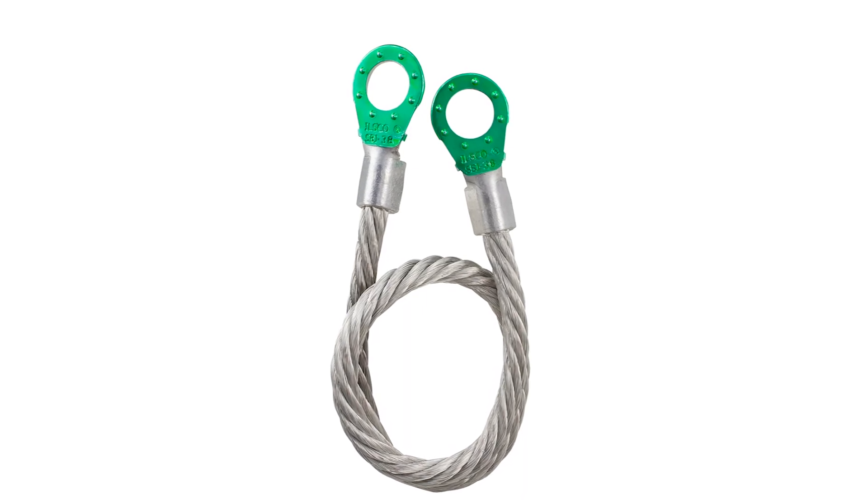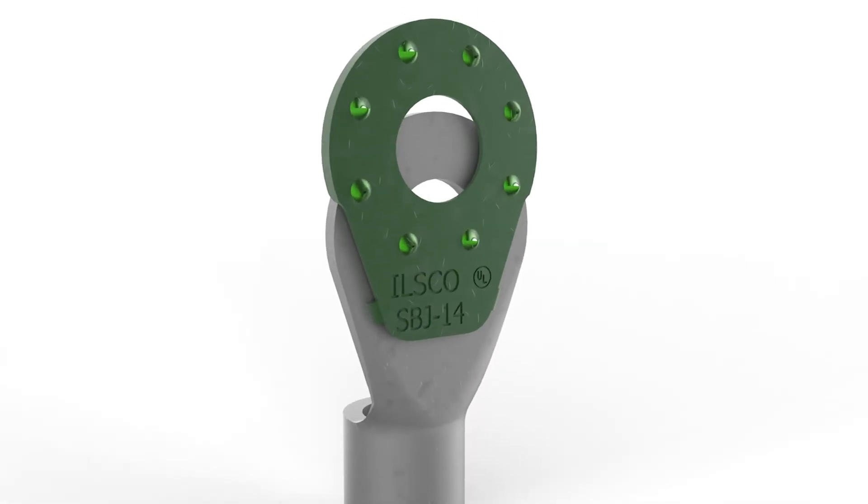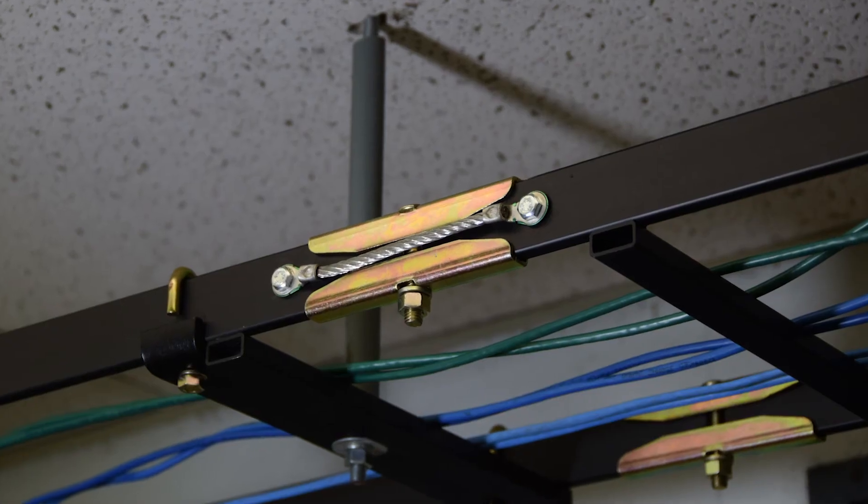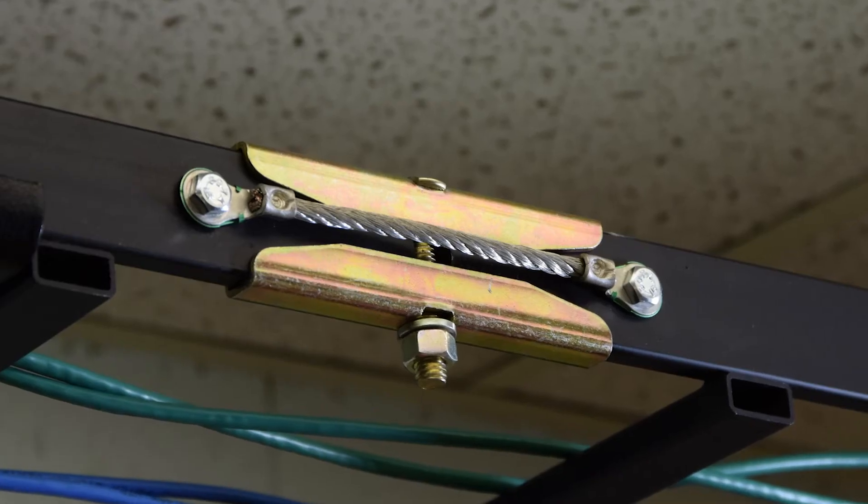ILSCO's surface bonding jumpers pierce through paint and oxide using the integrated pad, which eliminates timely surface preparation, saving you labor and improving safety.